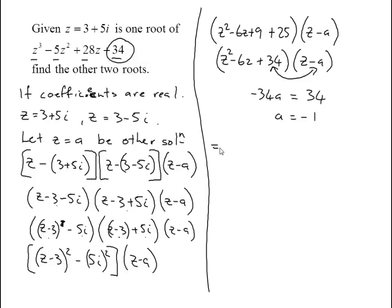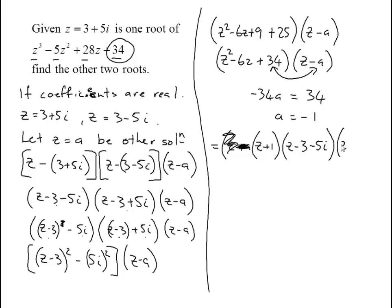So factorising: z minus (minus 1) is z plus 1. And we've got z minus (3 minus 5i) and z minus (3 plus 5i). Making those equal to zero gives the roots: z equals minus 1, and z equals 3 plus or minus 5i. And there are our three solutions.